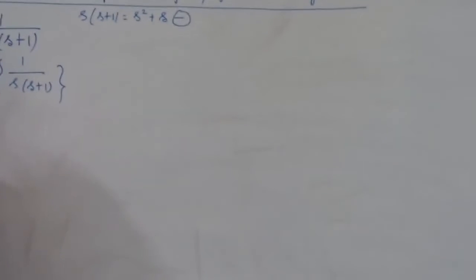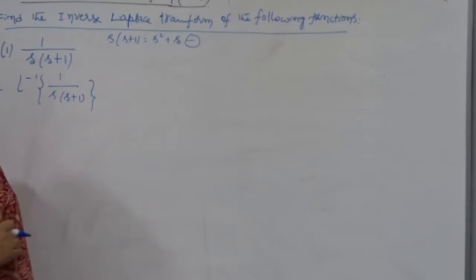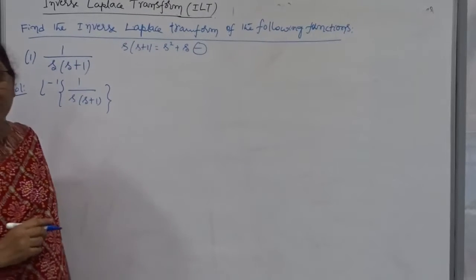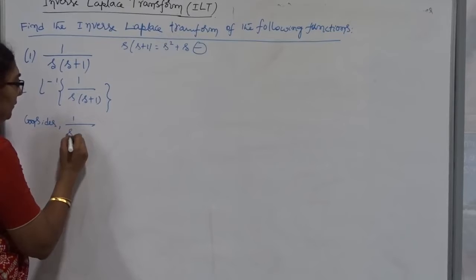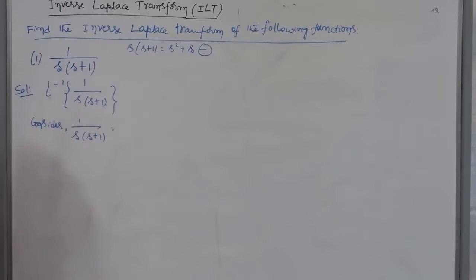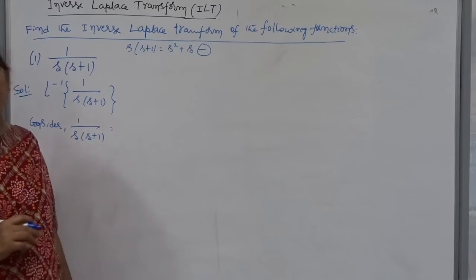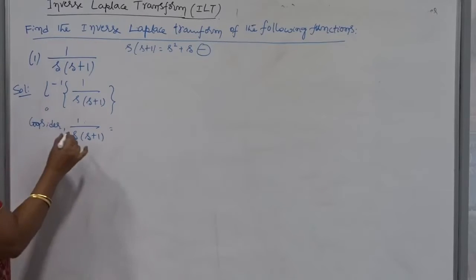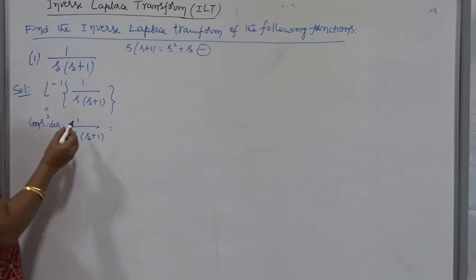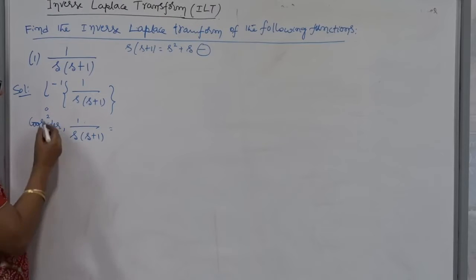Now here, I am not going to use the completing the square method because I don't have any constant term here. Instead, I am going to use partial fractions. First, consider this fraction separately and try to convert it into the sum of two terms by using partial fractions. You already know the condition: if you want to go for partial fractions, the fraction must be proper. This is proper because the highest degree of the numerator is 0 and the highest degree of the denominator is 2. So the degree of the numerator is less than the degree of the denominator — we say it is a proper fraction.